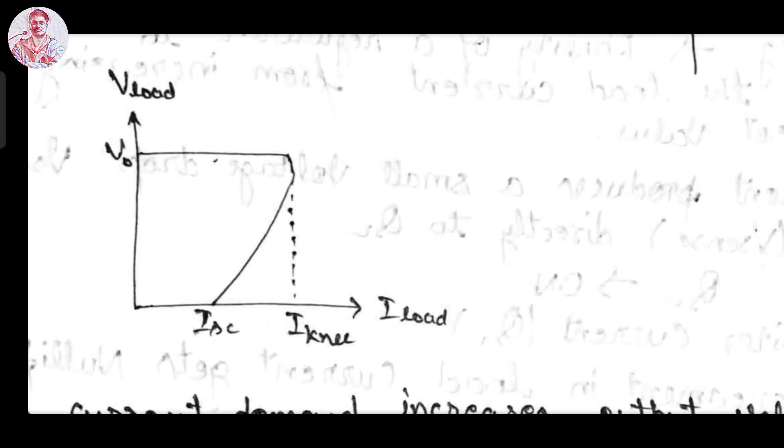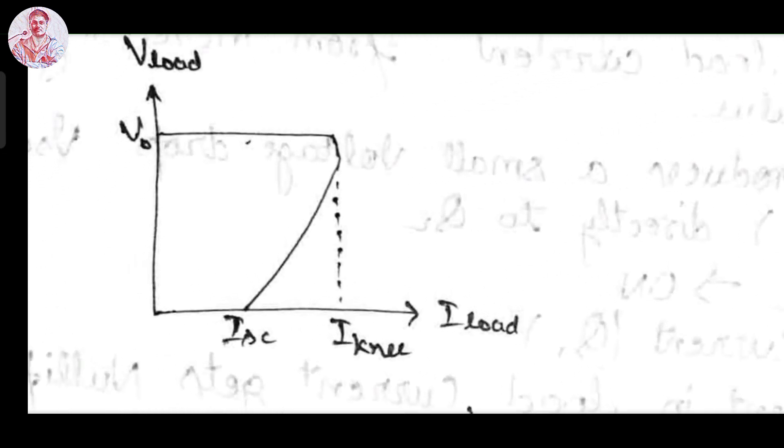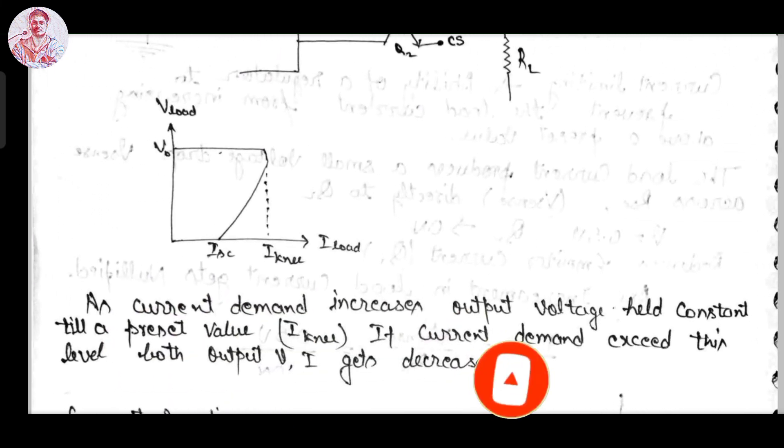This is the VI characteristic of IC723 voltage regulator with the concept of current foldback. Whenever the overload is exceeded, the I and V0 both get decreased. This is the concept of current foldback.